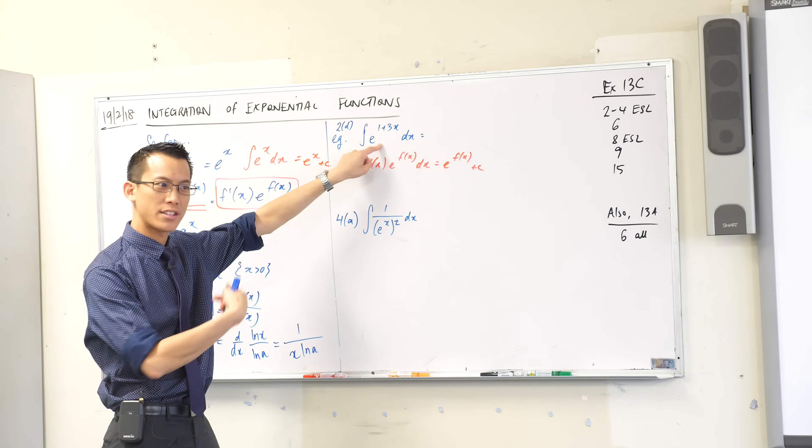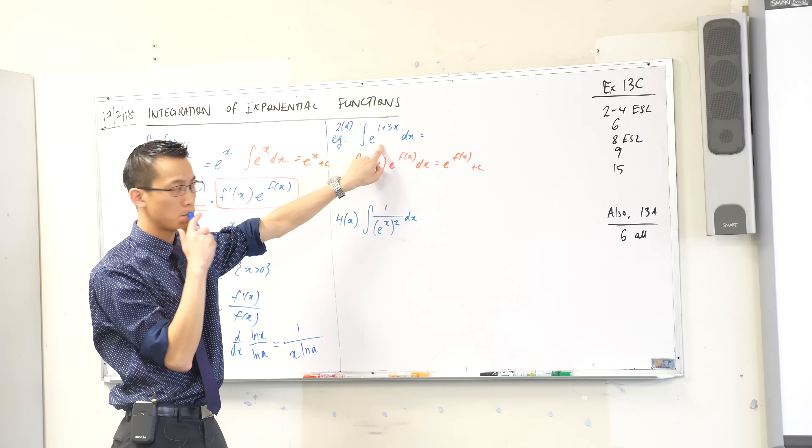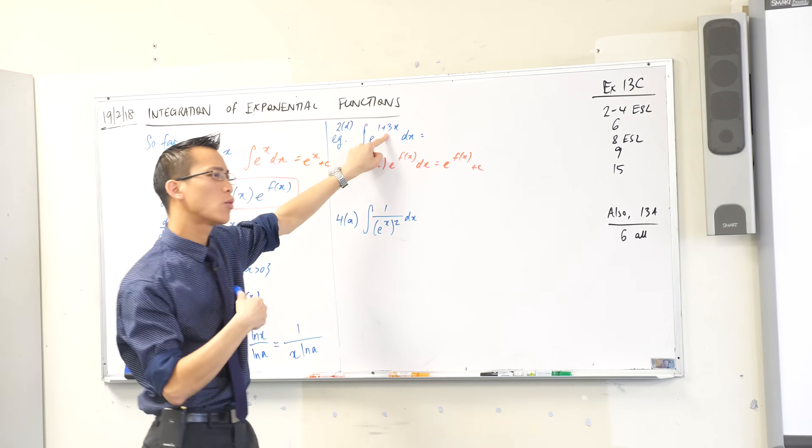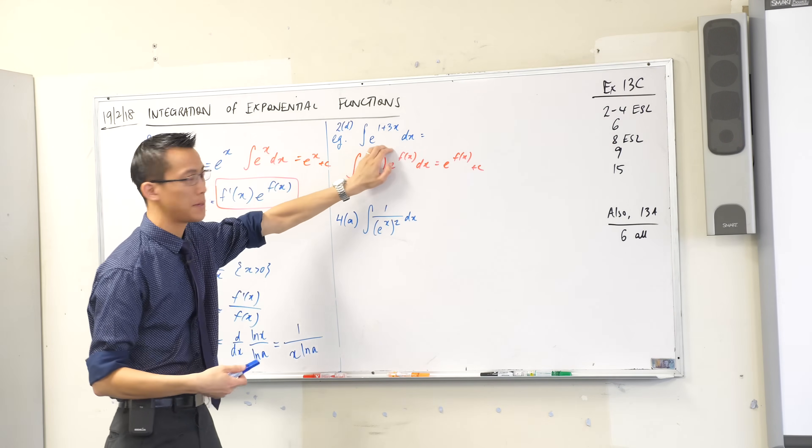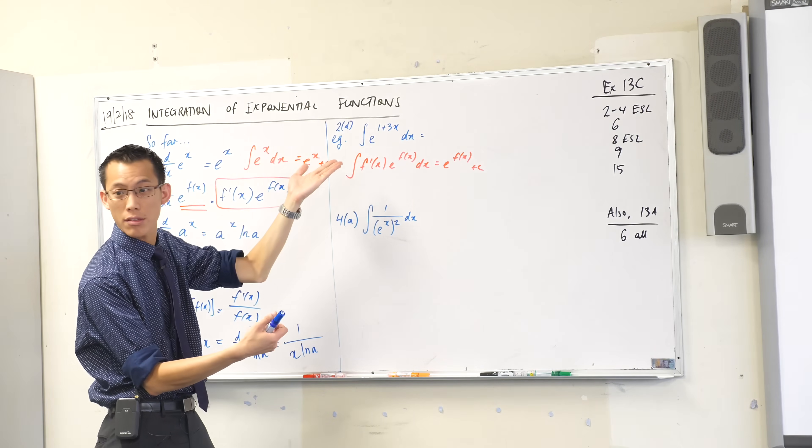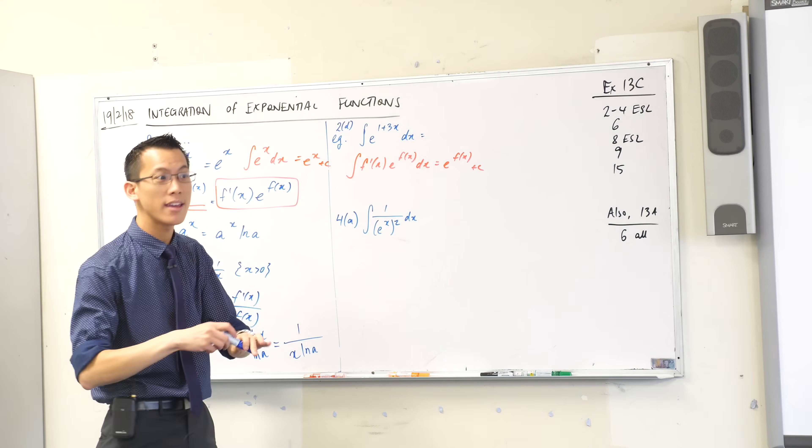So have I got that here? What's f of x in this case? It's the power, right? It's 1 plus 3x. So what would f dash be for this particular function? f dash would just be 3. Now I don't have a 3 there, right? But that's okay. 3 is just a constant.